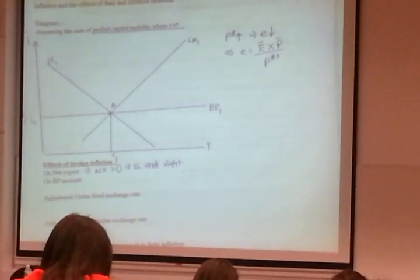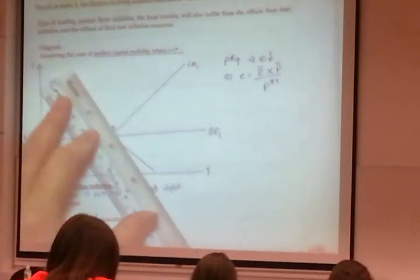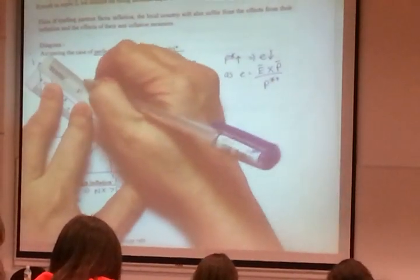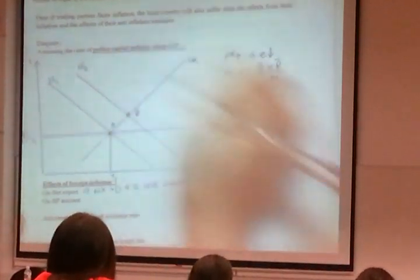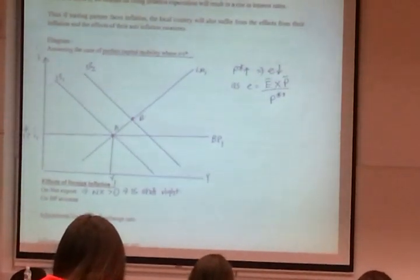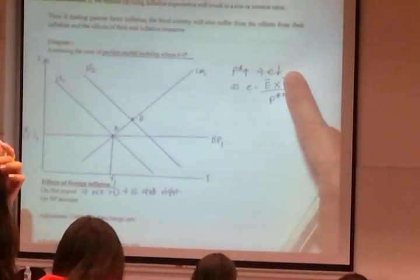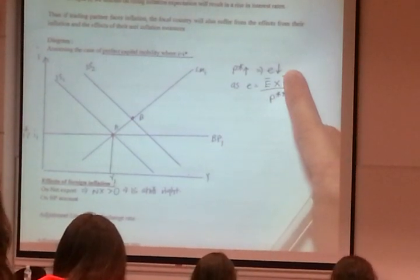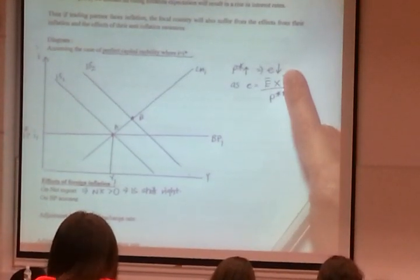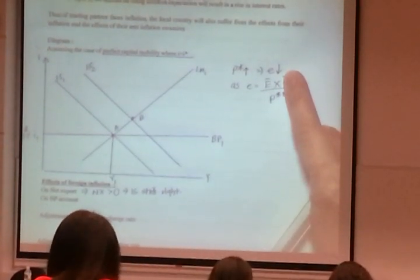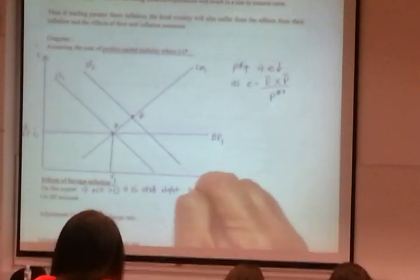Shift to the right, don't shift too much. For foreign inflation, the effect on net export will be positive. Because in real terms, foreigners will actually buy more, but you will buy less. So if X goes up, M goes down, IS shifts to the right. And then you reach point B.